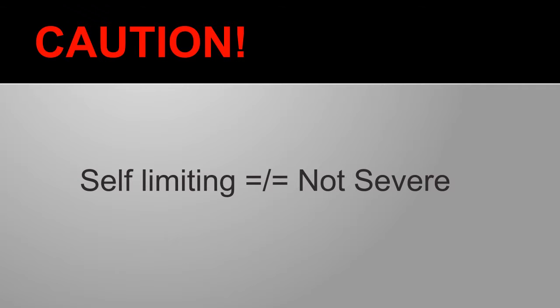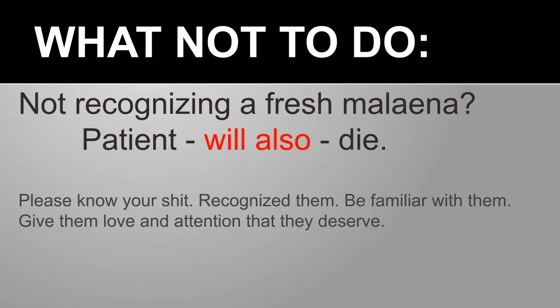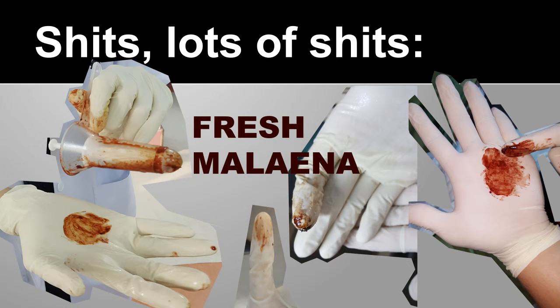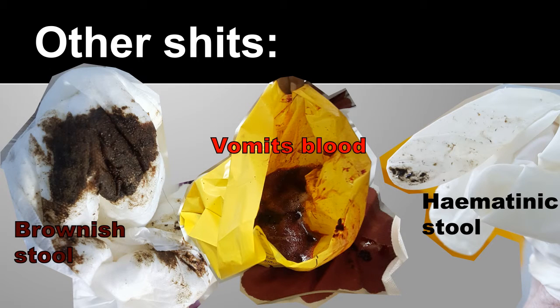Caution: just because LGIB is self-limiting doesn't mean it can't be severe. A patient with LGIB can bleed and bleed and bleed, requiring pints and pints of blood before it finally stops. Monitoring HB is very important — we had a houseman who missed a PM blood result, and when the next result came back the HB was 4.6; the patient collapsed before transfusion. Recognizing PR findings is also critical. One night a houseman on call was told by the staff nurse that the patient had massive fresh melena; in the dim light it looked brownish, he didn't recognize it as fresh melena, blood was not transfused in time, and the patient passed away two hours later. It is important to know your signs.